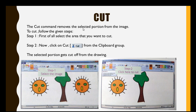But now we want only one sun. First of all, we will select the sun that we want to cut. After that, we will go to the clipboard group and click on the CUT option. Now that selected portion gets cut off from the drawing.